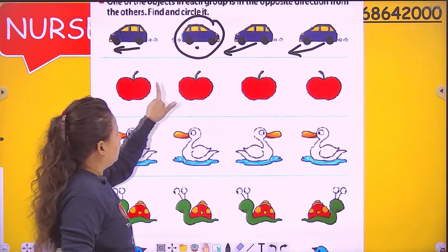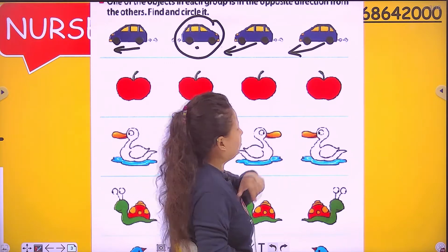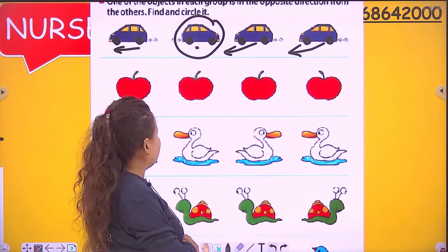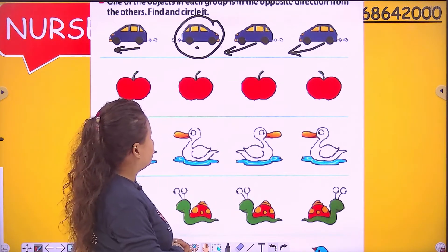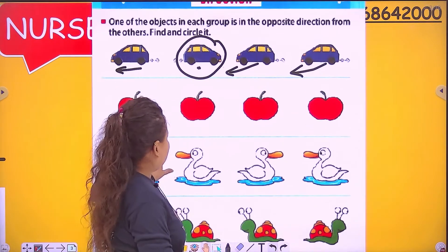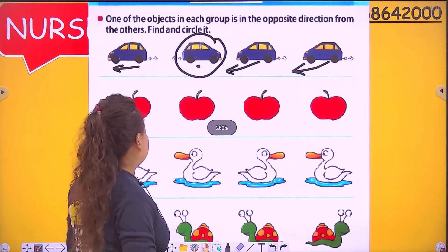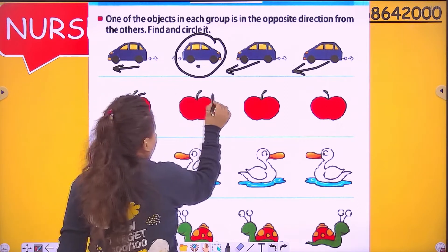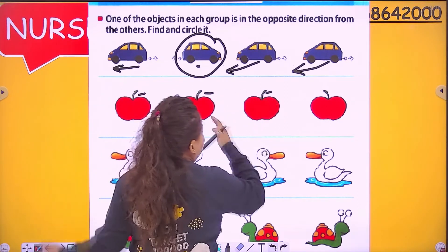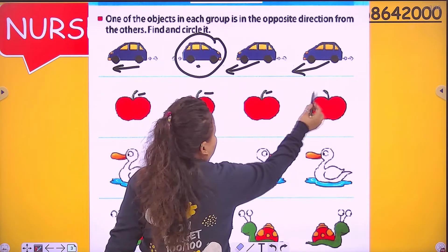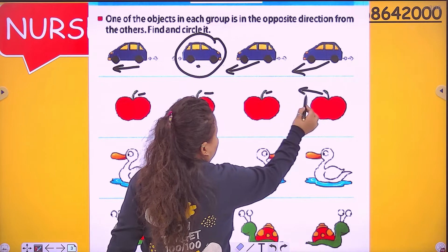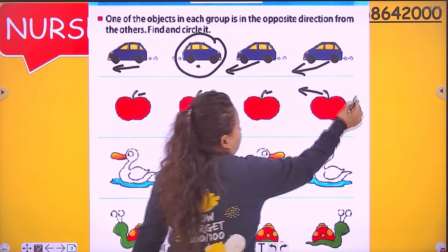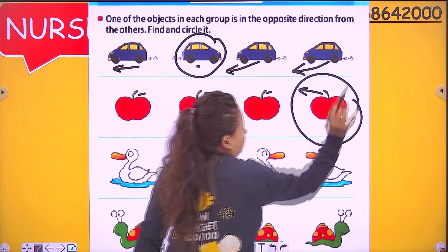Apple, apple, apple, apple — they are all saying the same. But can you see the difference? Look at the stems. The three apples have their stem on the right side, but this one has its stem on the left side. Circle it.